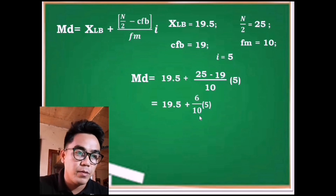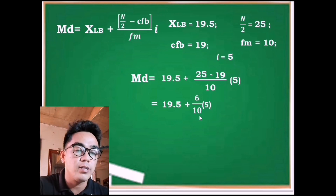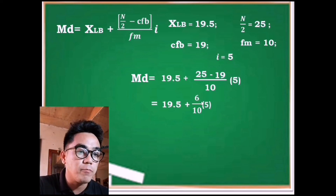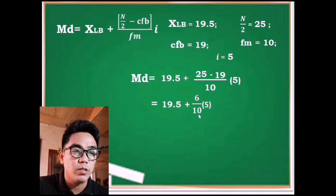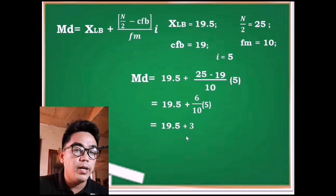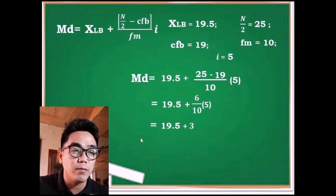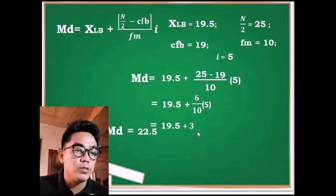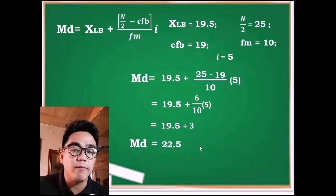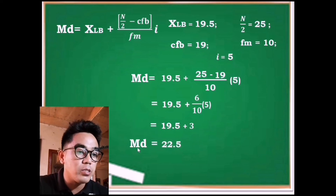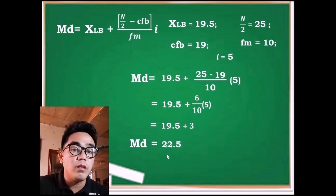We multiply first: 6 times 5 is 30, then divide by 10, which gives 3. So we have Md = 19.5 + 3. Adding these together, we get the median of grouped data.